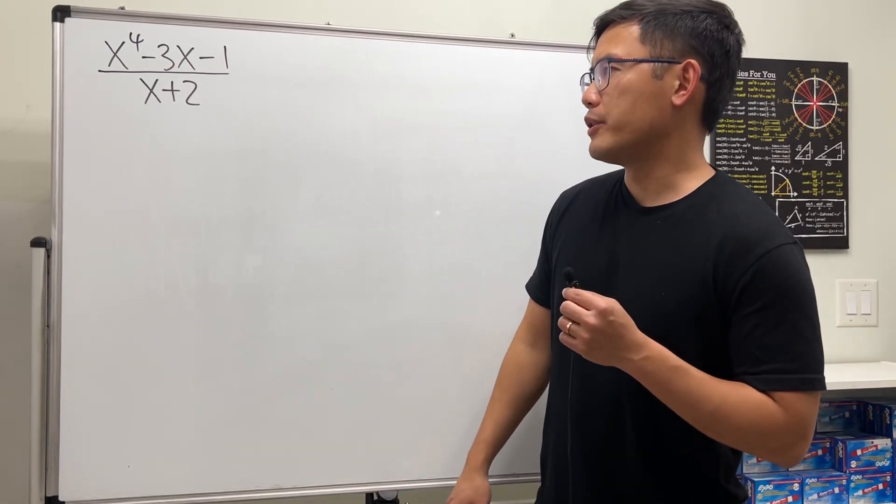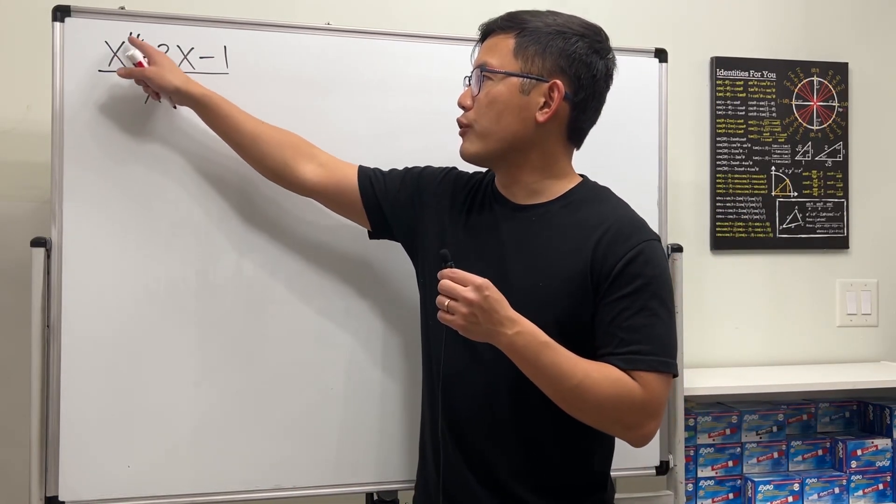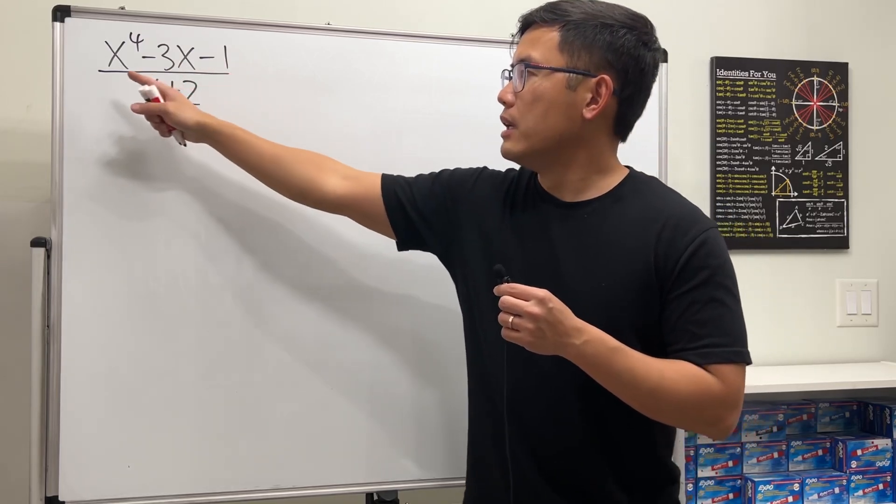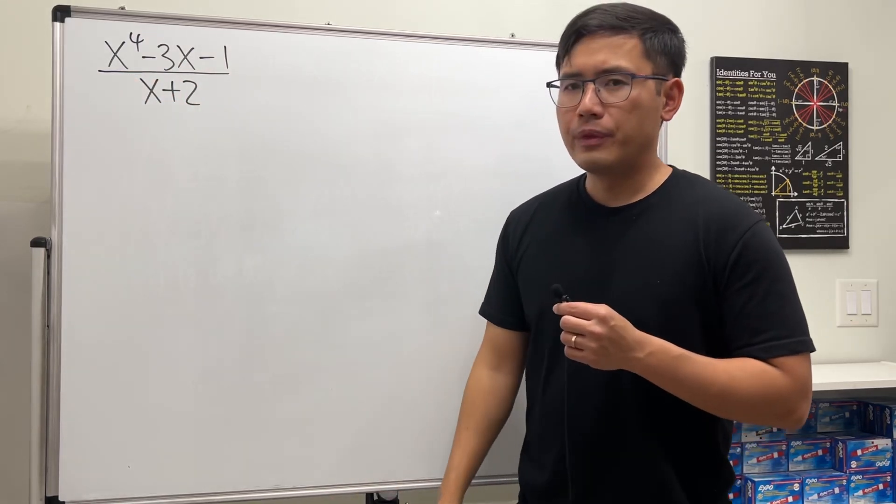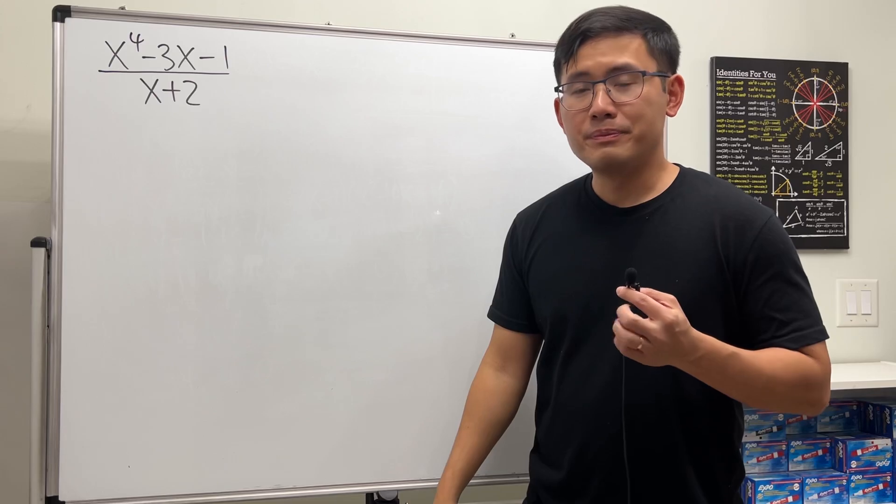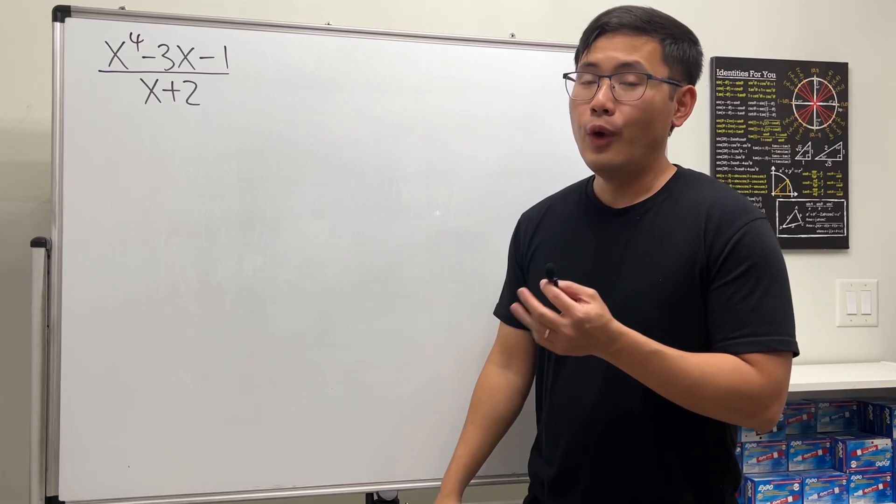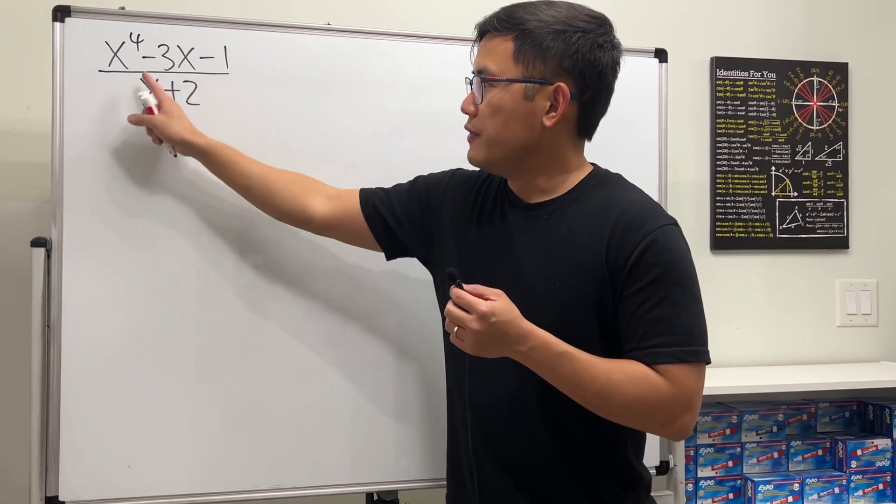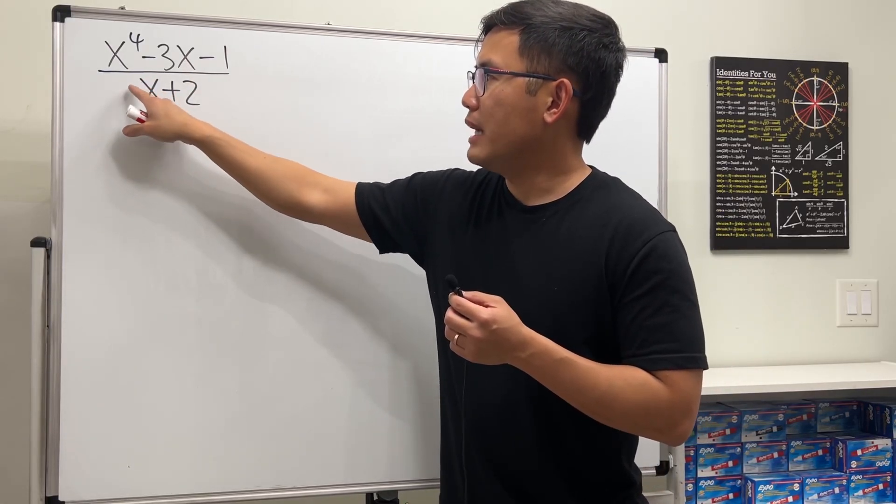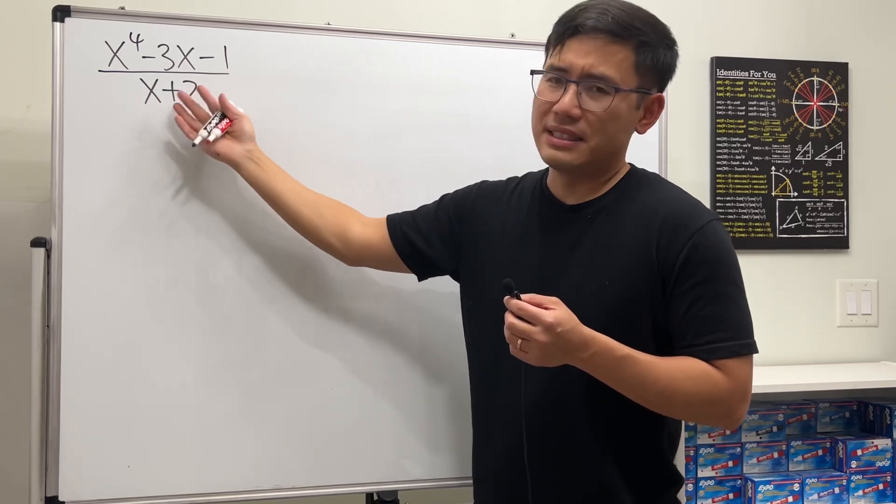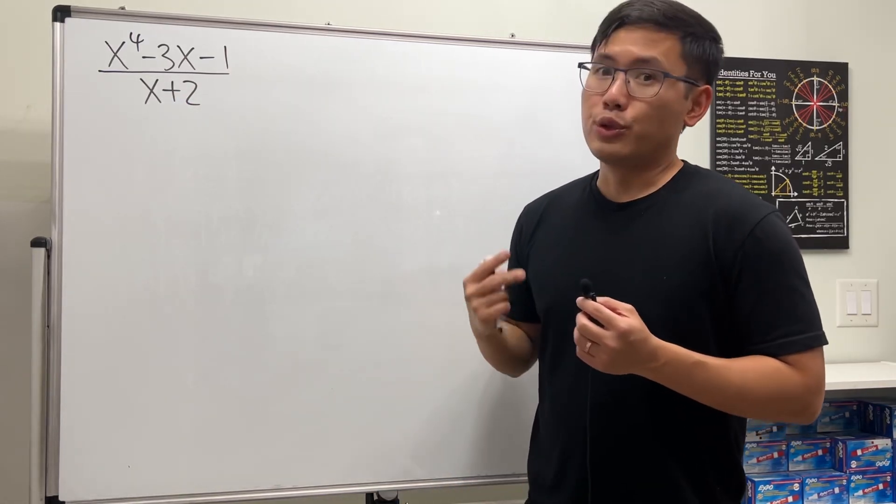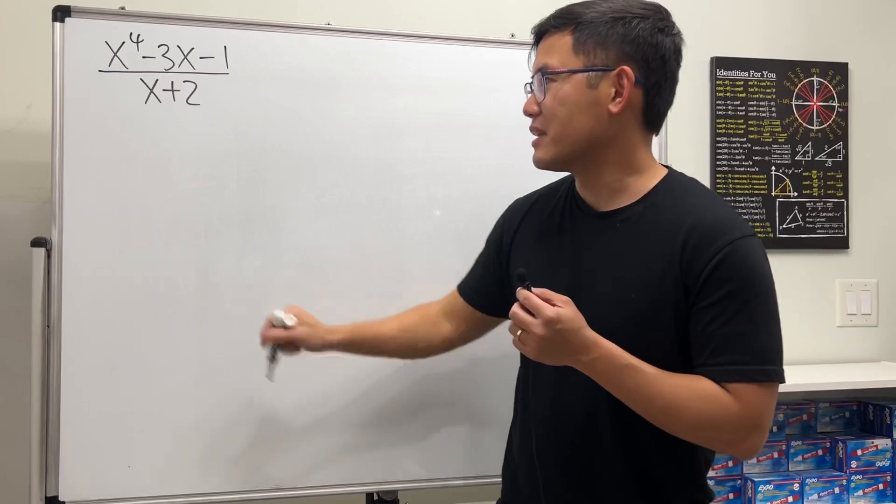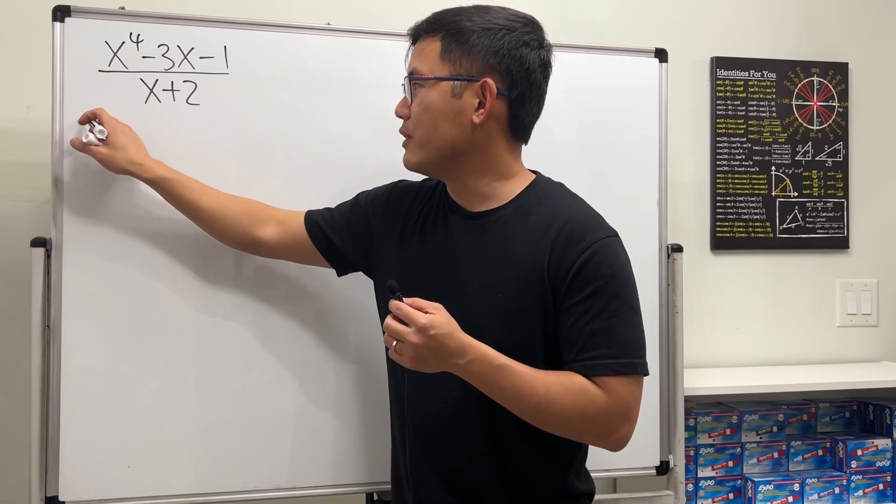Let's say you have to divide polynomials. Just like this, x to the fourth power minus 3x minus 1 divided by x plus 2. Which method should we use? Yes, you can use the long division or you can also use the synthetic division because the divisor here is just x, right? x to the first power and then minus negative 2 technically. But I will show you guys both. So let's get started with the classic long division first.